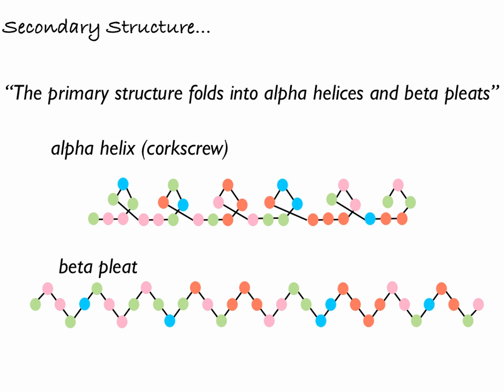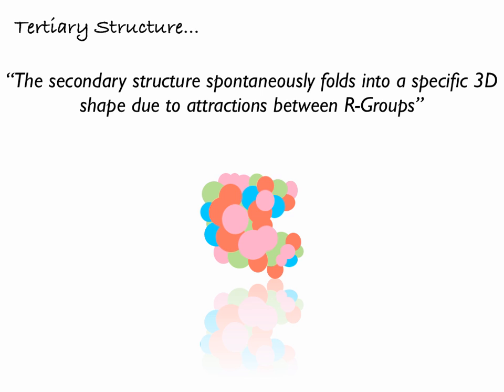The tertiary structure is where the secondary structure spontaneously folds into a specific 3D shape, due to attractions between the R groups. Each R group has a unique chemical formula, and some attract each other strongly. We can get covalent bonds and ionic bonds formed, producing a specific 3D structure that's really important for things like enzymes — if the enzyme's 3D structure isn't correct, the active site won't be the right shape and won't catalyse the intended reaction. This is all linked back to primary structure: even one amino acid difference can result in a wrong tertiary structure and an inactive enzyme.